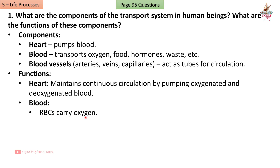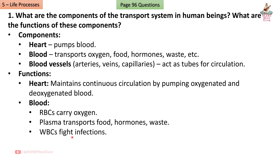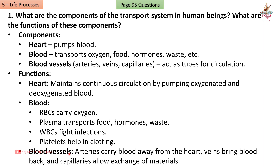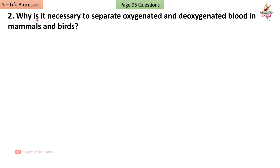Blood: RBCs carry oxygen; plasma transports food, hormones, and waste; WBCs fight infections; platelets help in clotting. Blood vessels: arteries carry blood away from the heart, veins bring blood back, and capillaries allow exchange of materials.